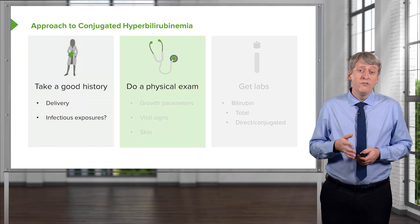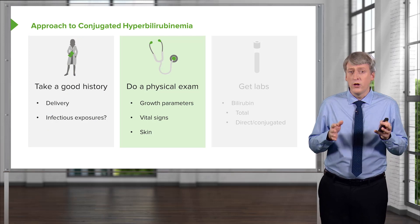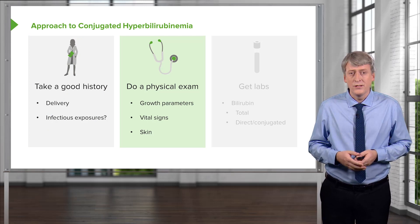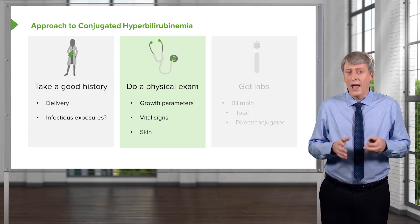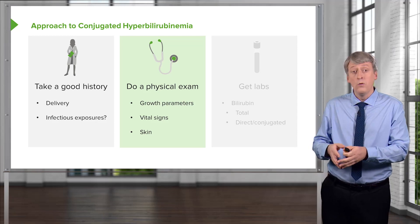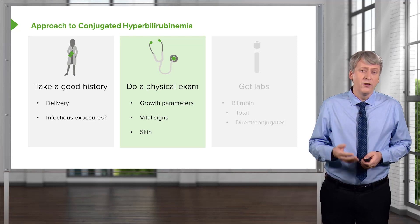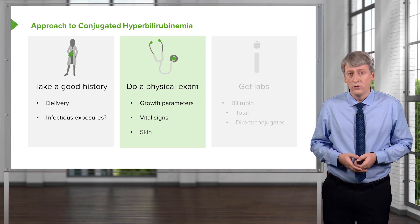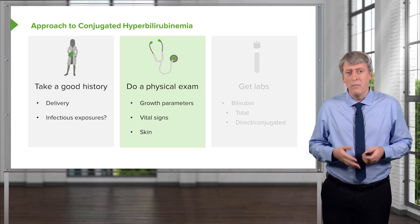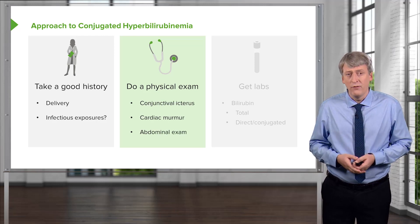It's critical to do a good physical exam on these children. Knowing their growth parameters and plotting them on a growth curve — both height, weight, and head circumference — is critical to understanding how the child is developing and whether the hepatic disease is affecting them or if this is part of a syndromic situation. Understanding vital signs and making sure they're normal is critical, and a skin evaluation will give you a sense of just how bad the hyperbilirubinemia might be prior to actually getting the lab value.